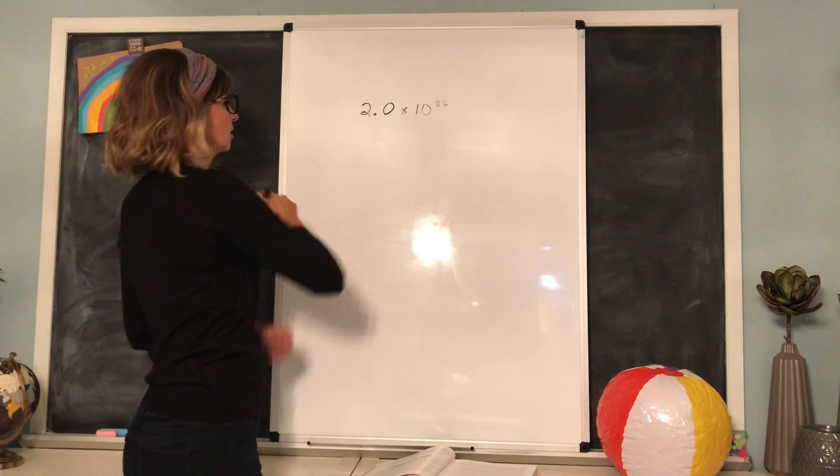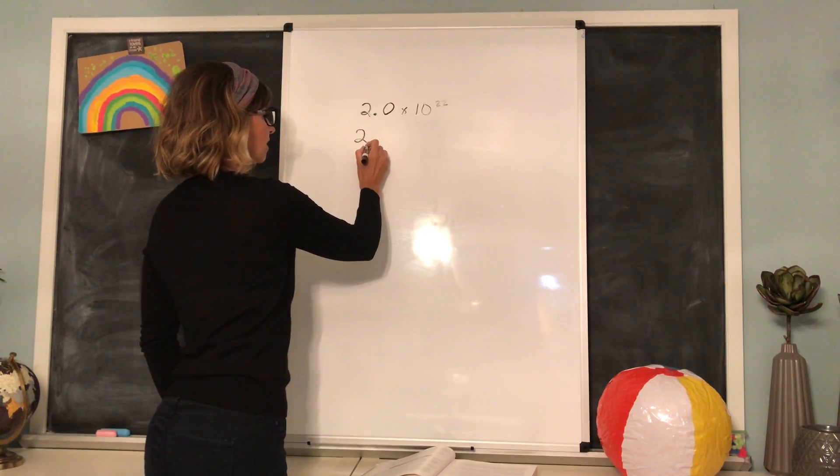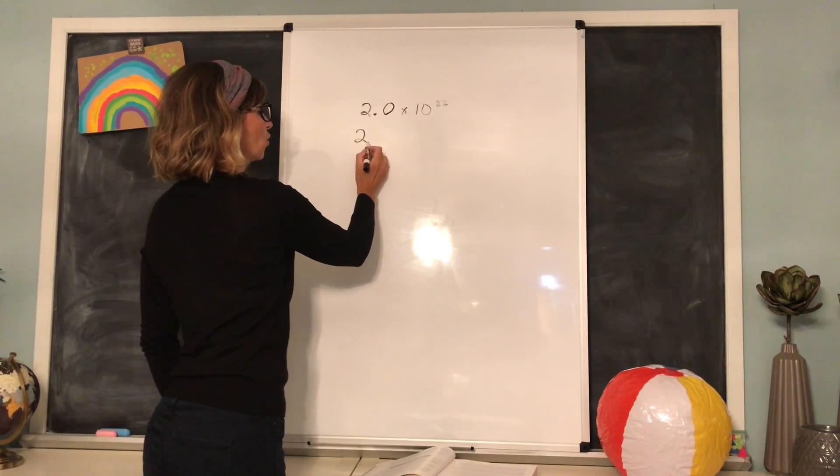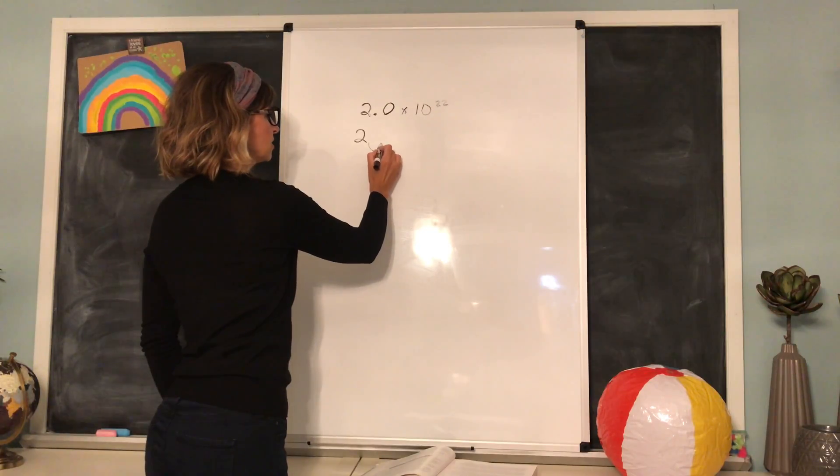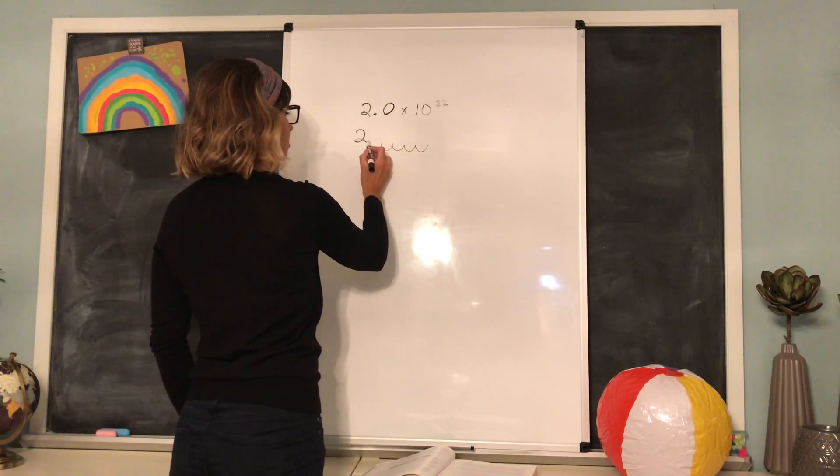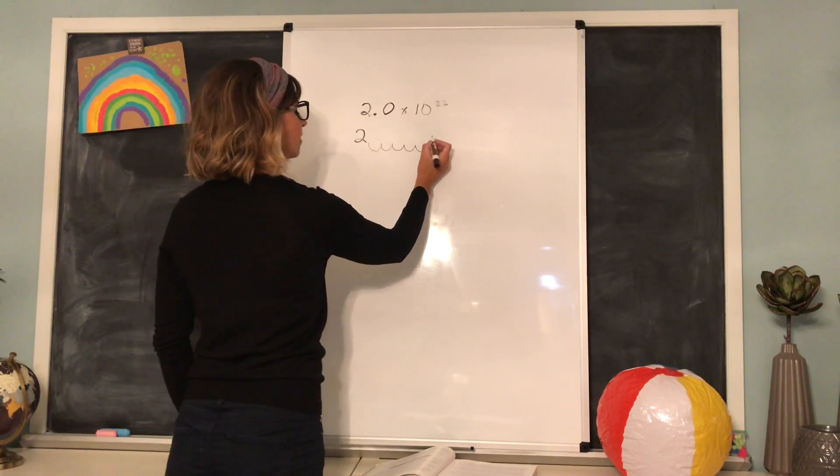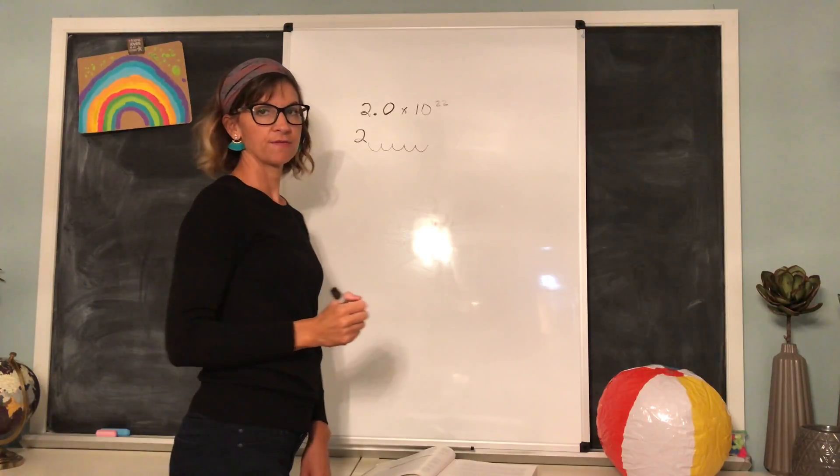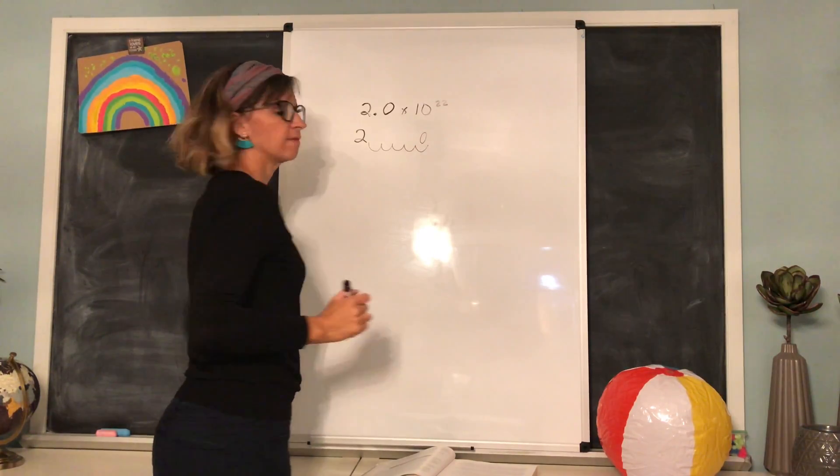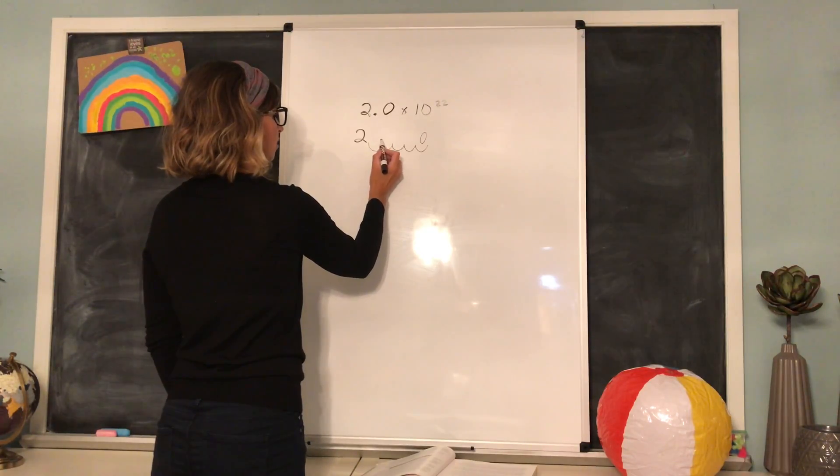Scientific notation would be a number like 2.0 times 10 to the 22nd. This would actually mean 2, and instead of having the decimal point here, we're going to move it over 22 times. I'm making these little curves and imagining a 0 here. I'm going to go back and fill in my 0s later, but I'm moving the decimal over from here to here.